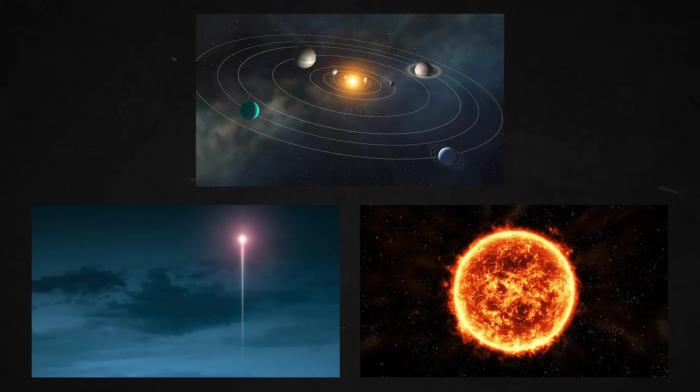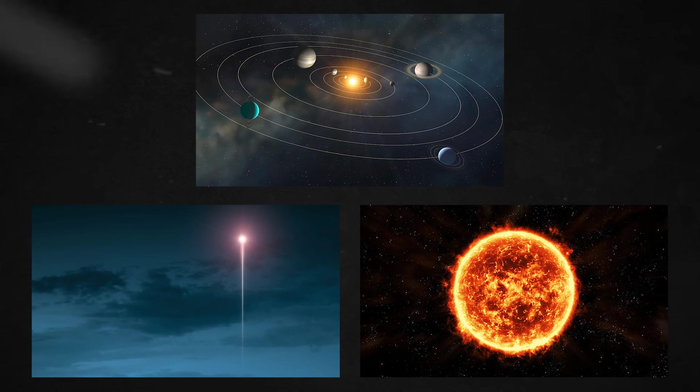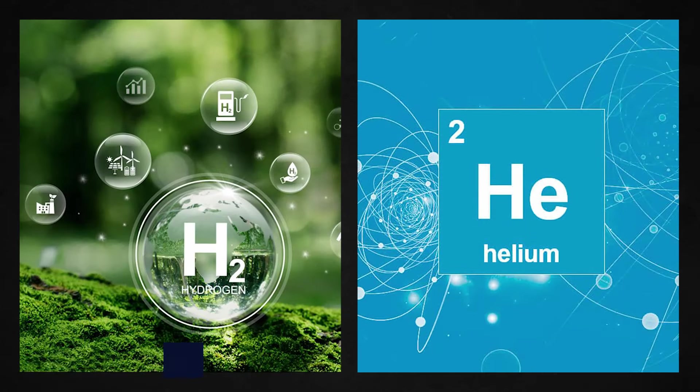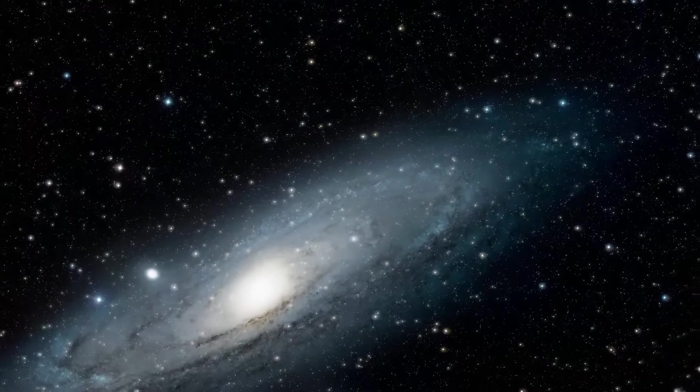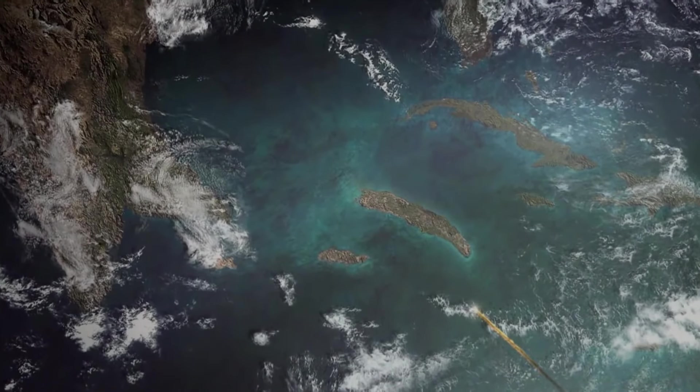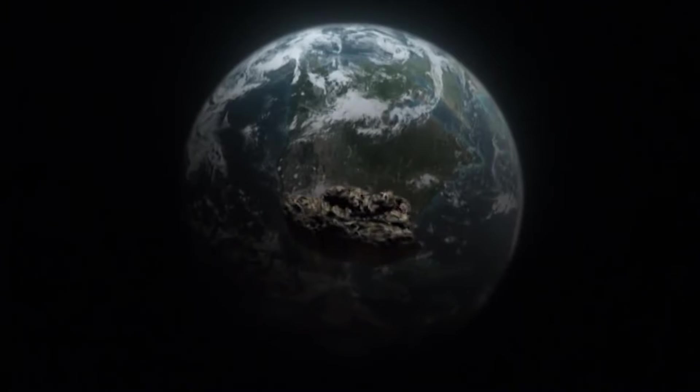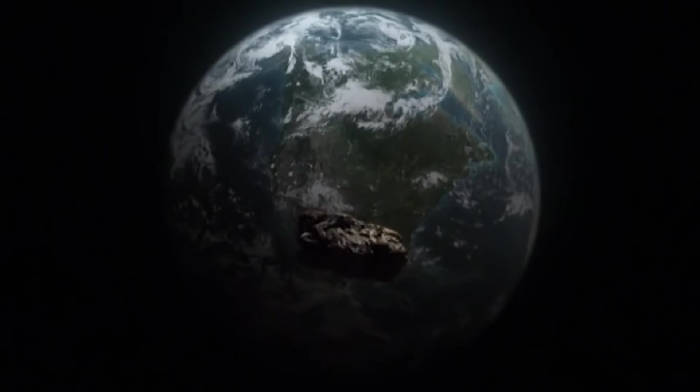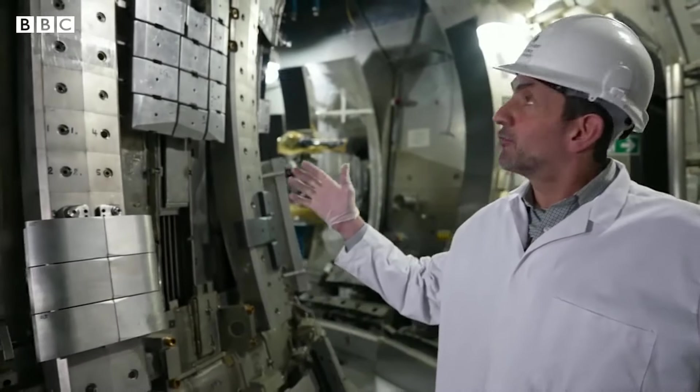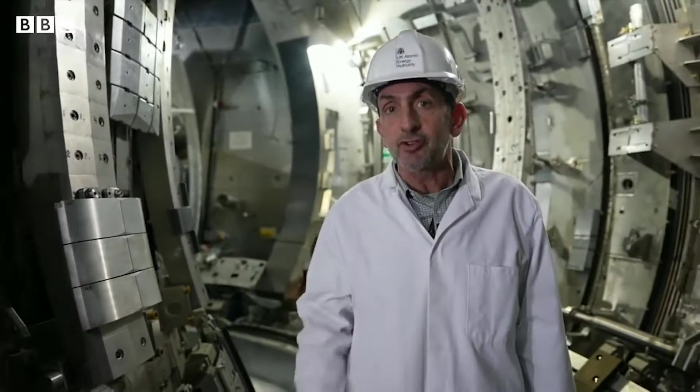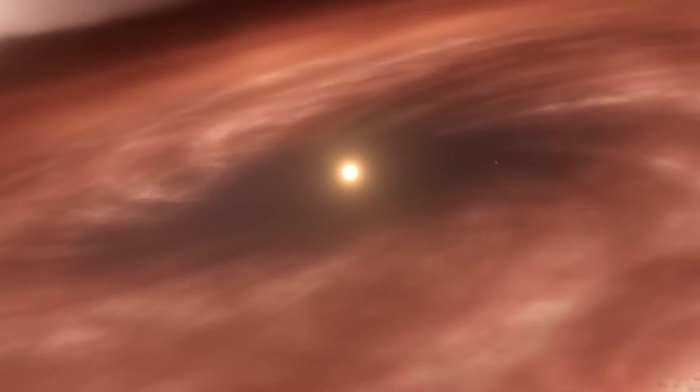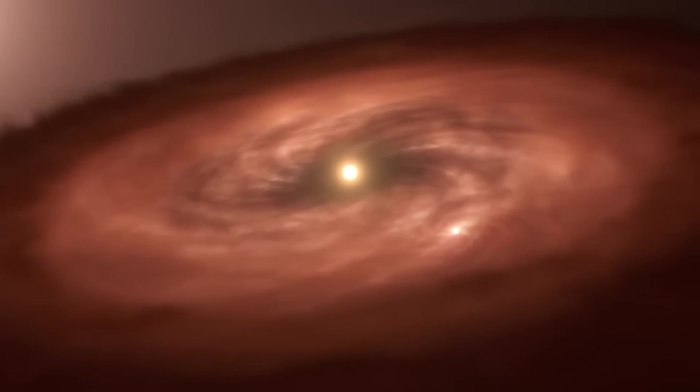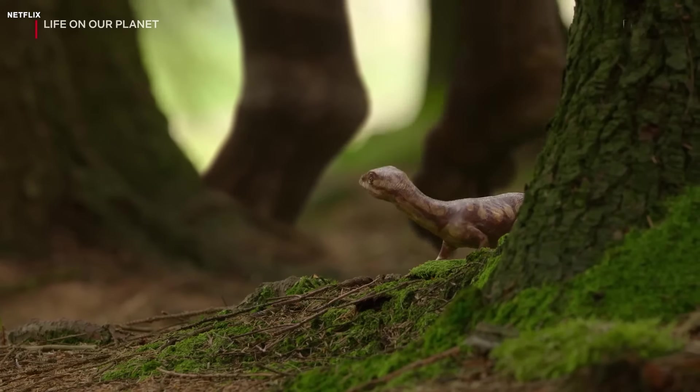At the center of our solar system is the sun, a luminous, nearly perfect sphere of hot plasma, primarily composed of hydrogen and helium. This massive star has a diameter of about 870,000 miles, about 109 times larger than Earth. Through a process called nuclear fusion that occurs in its core, the sun generates a large amount of energy. In this process, hydrogen atoms fuse to form helium, releasing vast amounts of heat and light, sustaining the sun's intense brightness and warmth and providing the necessary conditions for life on Earth.